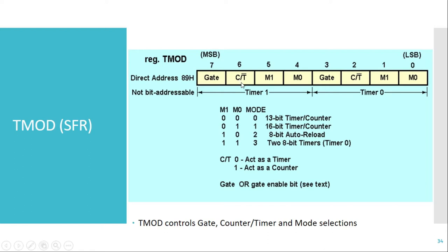If the C/T̄ bit is 0, it means the timer will act as a timer, and internal clock pulses will be given to the timer register. It will increment the timer register on every clock pulse.